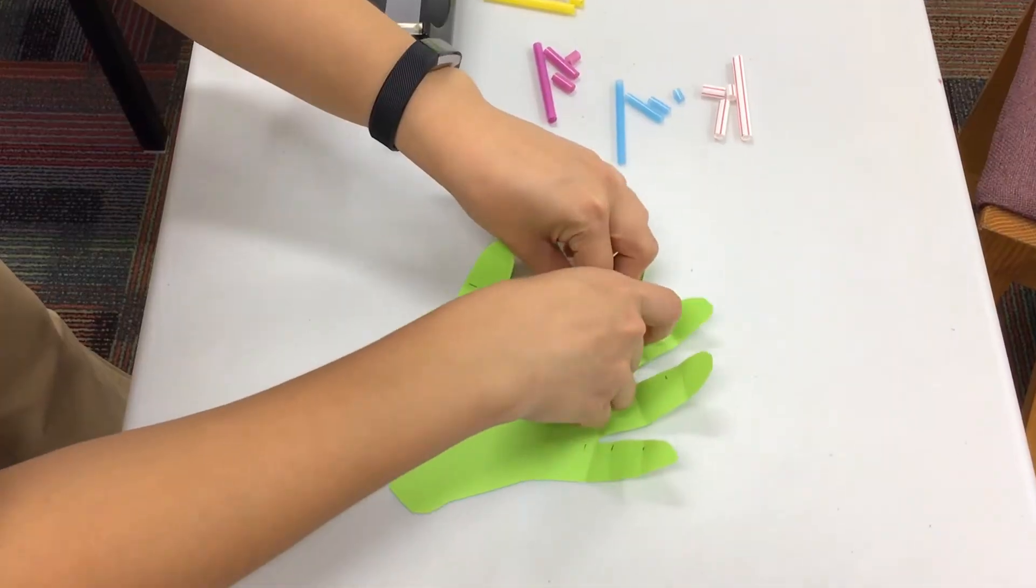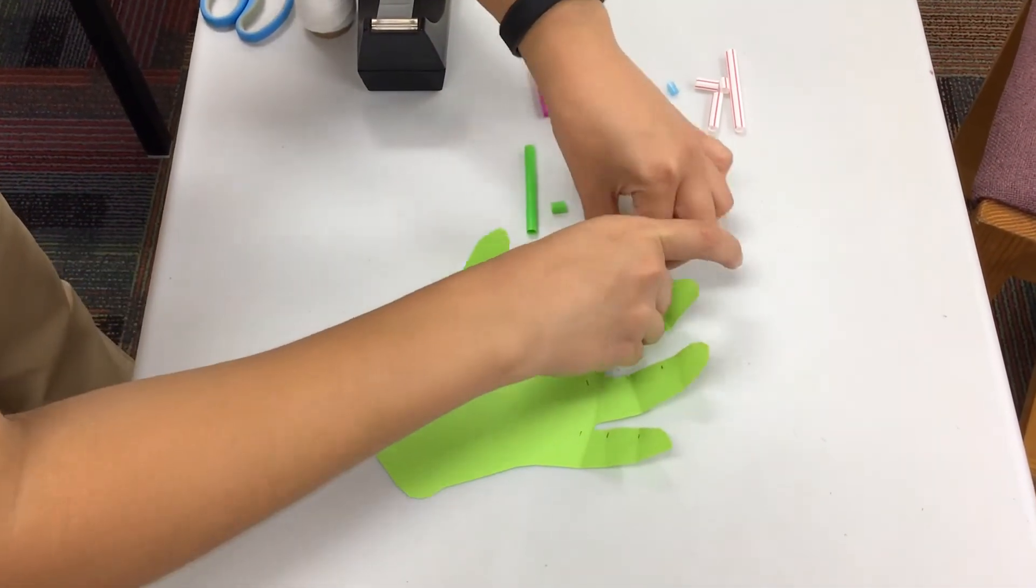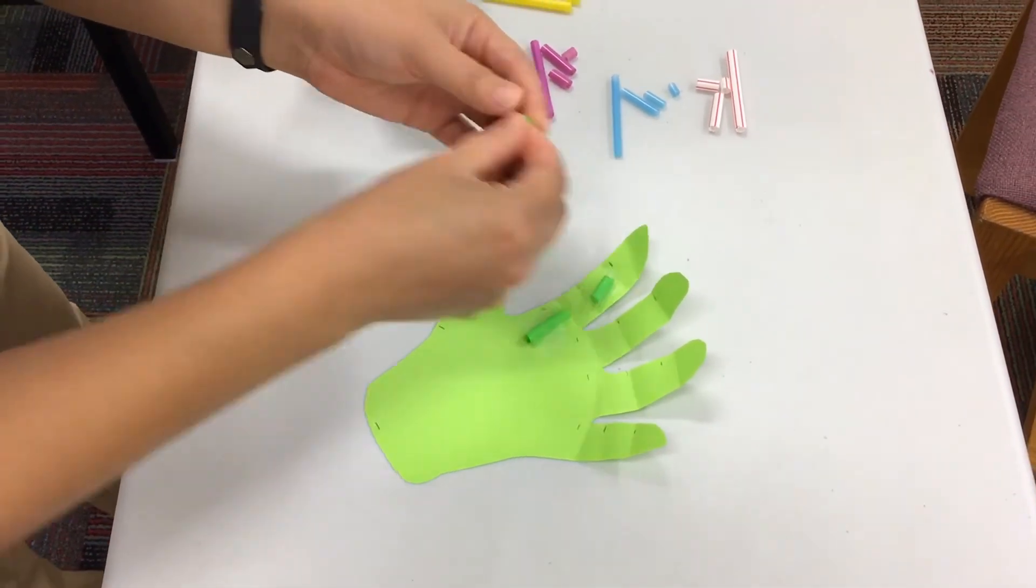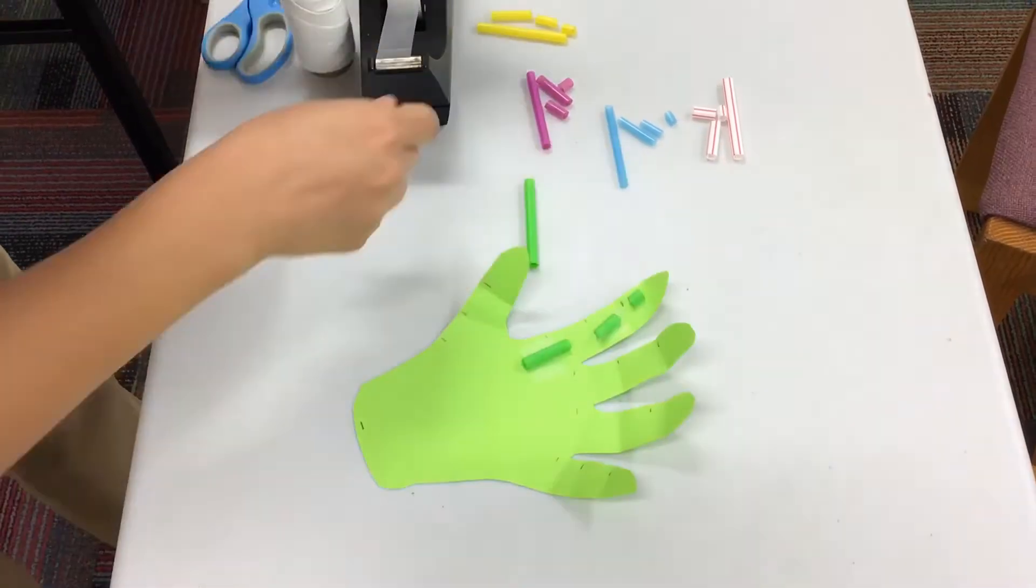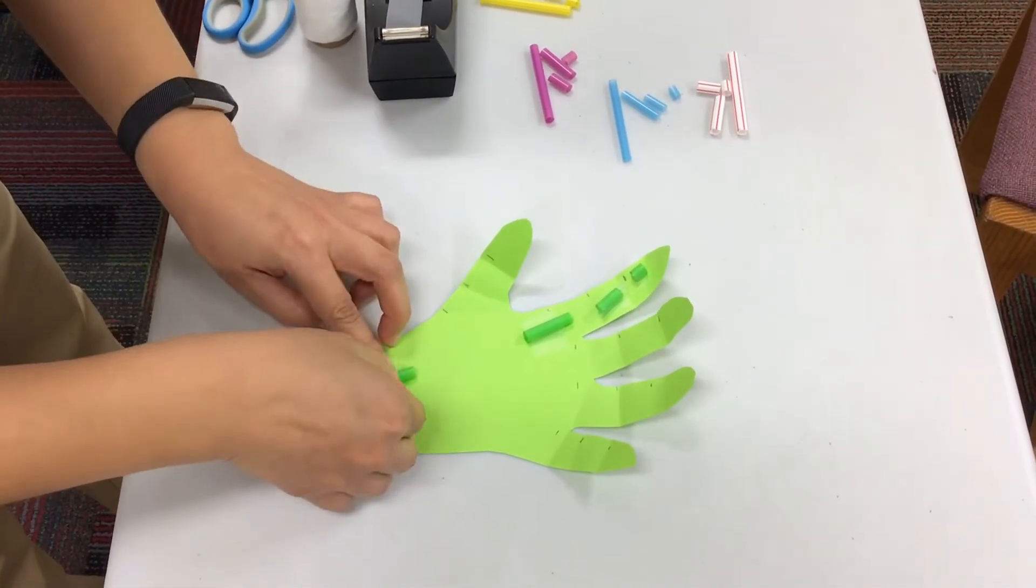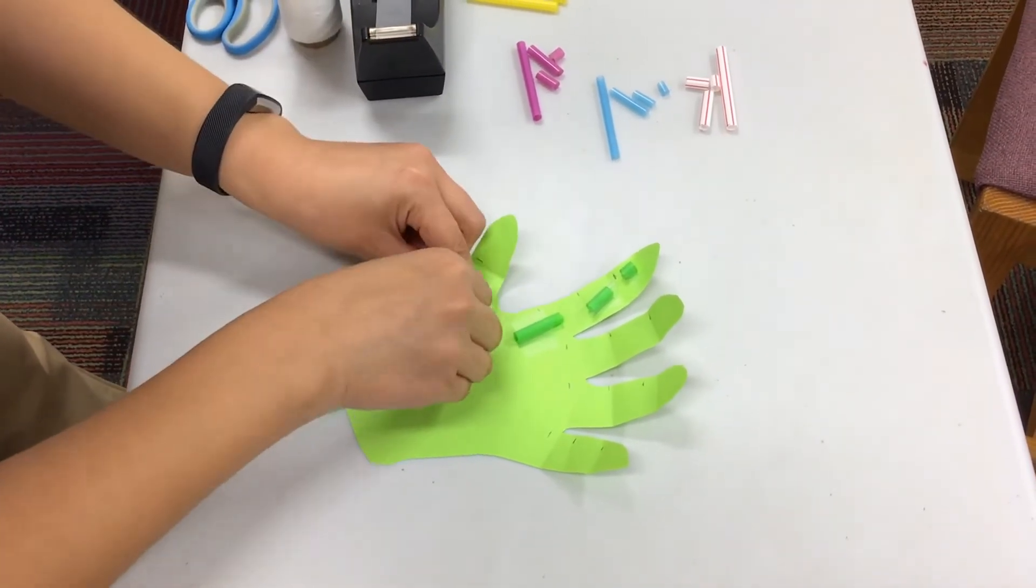Now you will tape the straw pieces onto the hand in between the joints and you want the straws of the same color to be aligned together so that later you can move different fingers accordingly. This is not a requirement but it makes it easier later on to move your robotic hand.